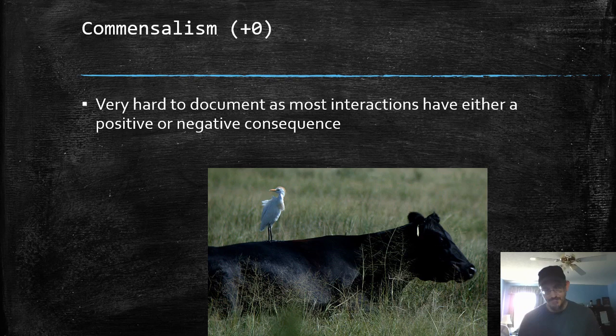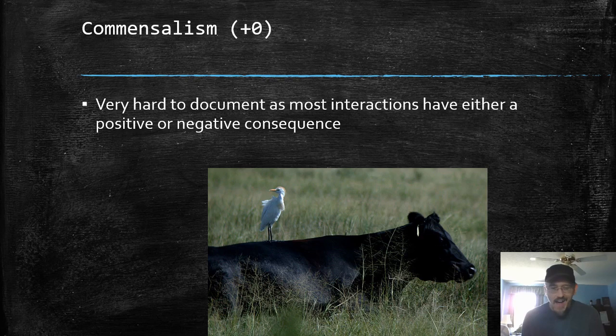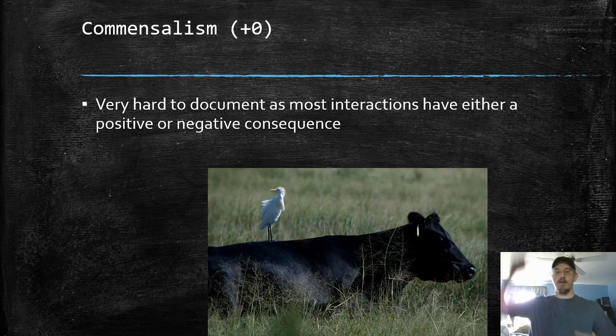Commensalism is a relationship between organisms that's actually kind of hard to document with absolute clarity, because maybe one benefits and maybe one is actually hurt — but maybe it's not hurt. Like, is this cow hurt by that egret standing on its back? Probably not. This is when one organism benefits — the egret gets to stand up higher in the air, gets to see predators coming — and the cow is unaffected. That's commensalism.